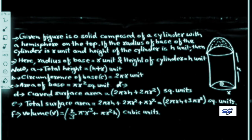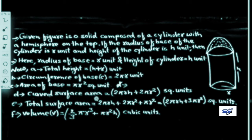Curved surface area equals 2πRS + 2πR² square units, where both the cylinder and hemisphere curved surfaces are included. Total surface area equals 2πRS + 2πR² + πR² square units — these three components are added together.